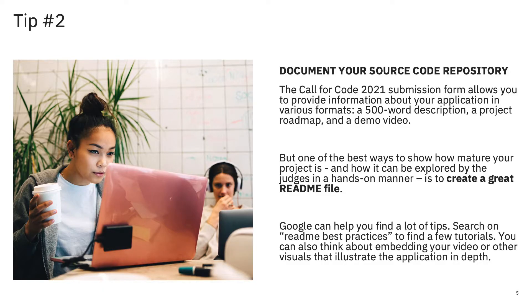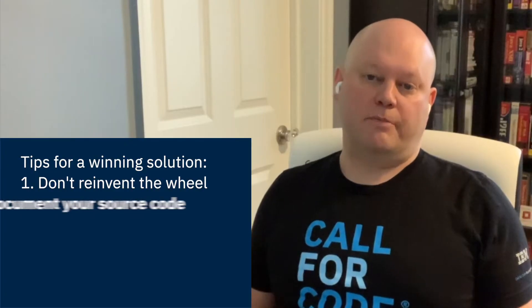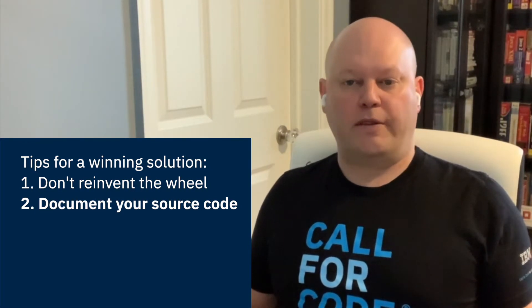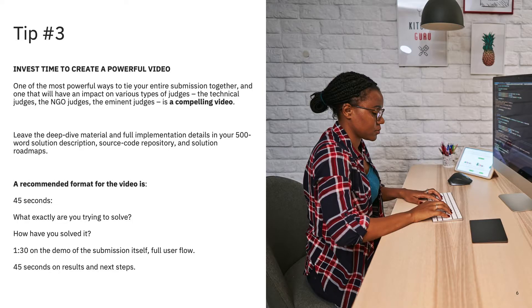My second tip is to document your source code repository very well — that goes beyond what goes in the submission form. The Call for Code submission form lets you provide information about your application in various formats, but one of the best ways to detail how your code works and how it solves the problem is to provide as much additional detail as possible in a consumable way so judges can understand what you've built. A great way to do that is to start with a great README file. There are lots of best practices for this, and our project skeleton has one fleshed out that you can use for inspiration.